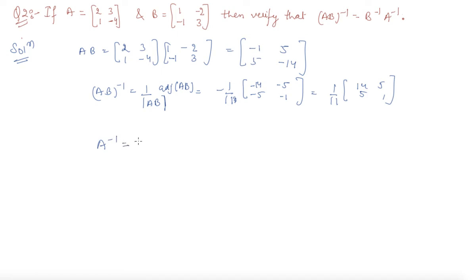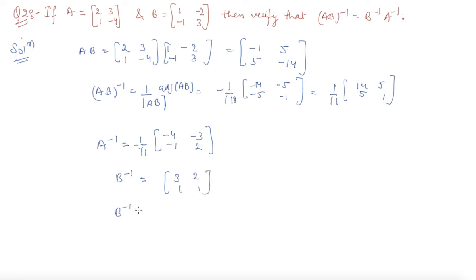Now we will find out A inverse, which is minus 1 by 11, because 2 into minus 4 is minus 8, minus 3, giving minus 11, and we take the transpose of each element. Similarly, B inverse is found with the mod equal to 1. So B inverse times A inverse is coming out to be 1 by 11 times the matrix 14, 5 / 5, 1. This equals AB inverse, which we needed to show.